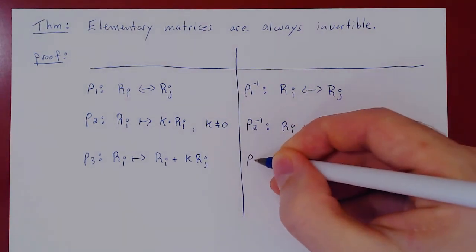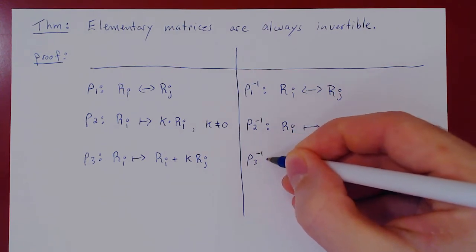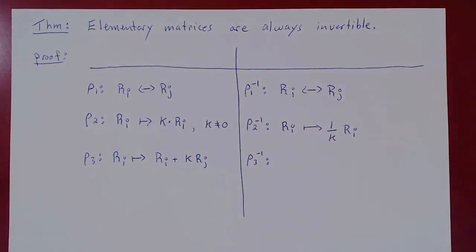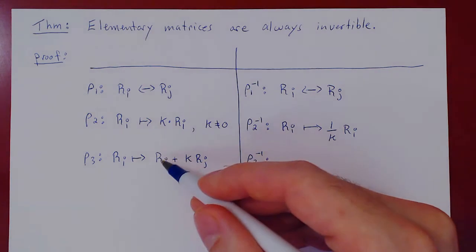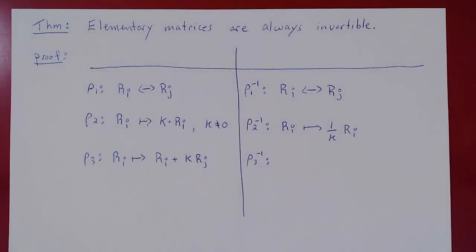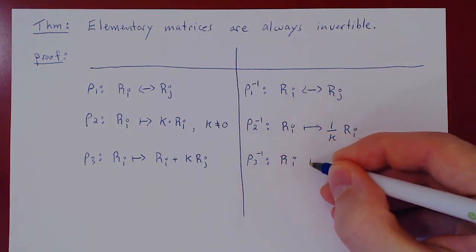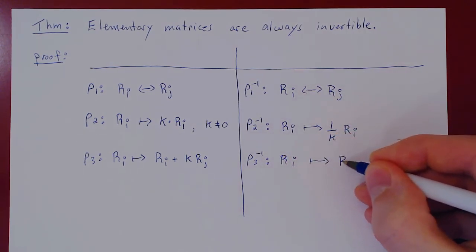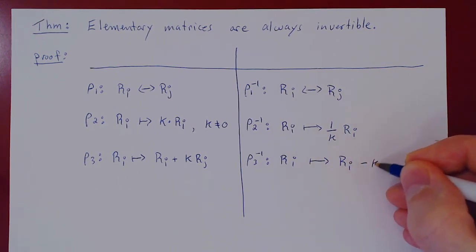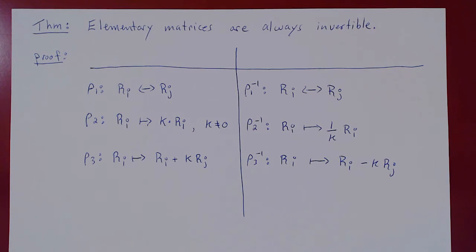How could you undo this operation? How could you invert it? Well, again, it's quite simple. You've added to row i k times row j. We'll take it away, subtract it, and you're back to the original row. So take row i and now subtract from row i the same amount k times row j, and you've just undone this operation.